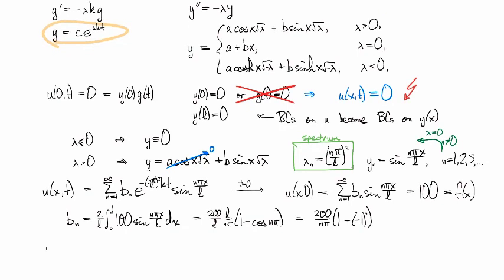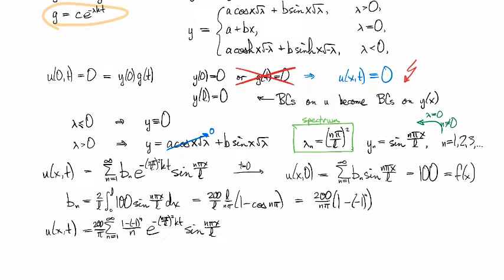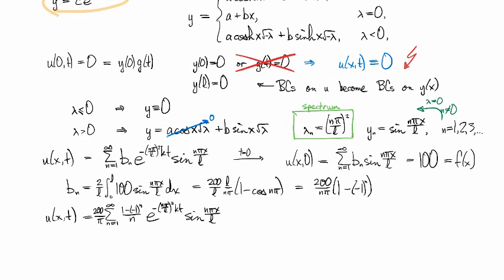And I now know that my general solution is this series with coefficients that look like 200 over pi times 1 minus negative 1 to the n over n times e to the minus lambda n pi over l squared times k t sine n pi x over l. And the only thing that remains is to maybe mess around with the formula a little bit and make it prettier.